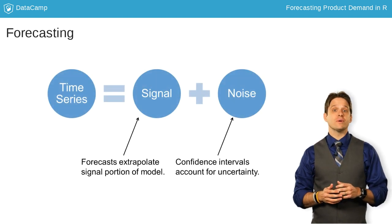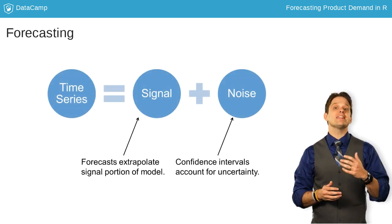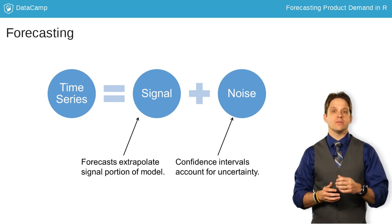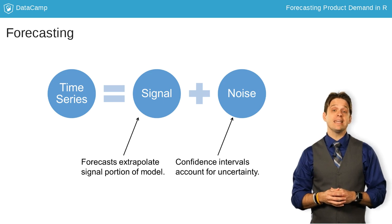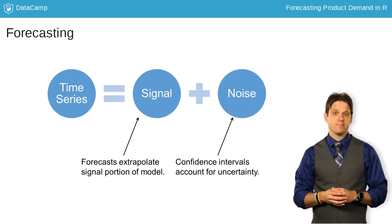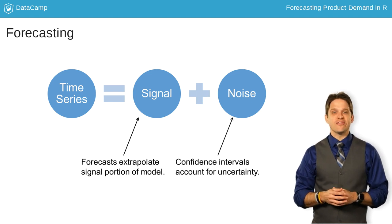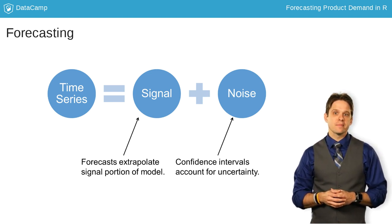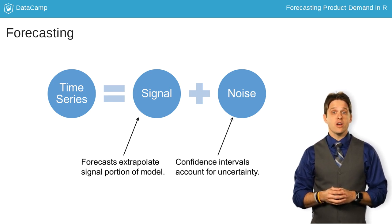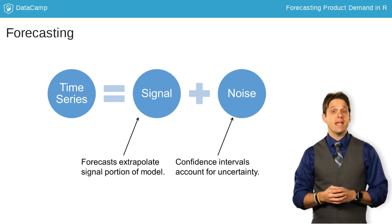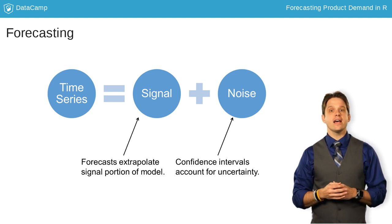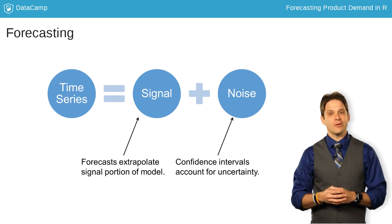What time series models are doing is essentially finding the pattern or the signal in your data. They are then extrapolating this signal repeatedly over time. Now extrapolation sounds really bad, so instead we call it forecasting. Of course, this forecast is not going to be perfect. In your data, you have both signal and noise. The remaining noise is what helps us estimate confidence intervals around our forecasts.